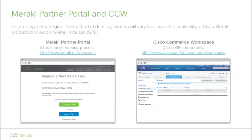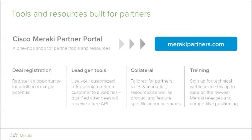CCW is accessed at cisco.com/go/commerceworkspace, and your Cisco ID must be associated with an active Cisco partner organization. The Meraki Partner Portal is a platform that also provides a place to perform deal registration, but this ordering process is only for products from the Meraki product portfolio. The Meraki Partner Portal is located at merakipartners.com and contains numerous tools and resources catered specifically to partner reps.